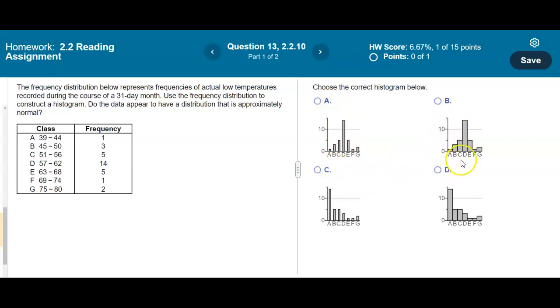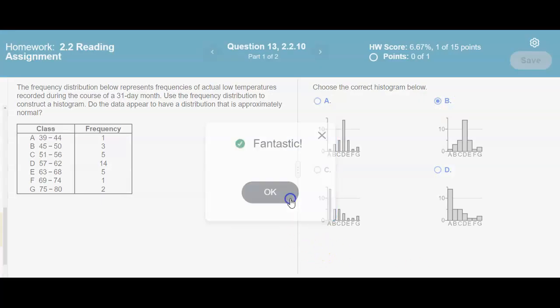Now we look at B and D. Which one represents a normal or approximately normal distribution? Well it looks like B. So we're going to go ahead and select B and there is our result.